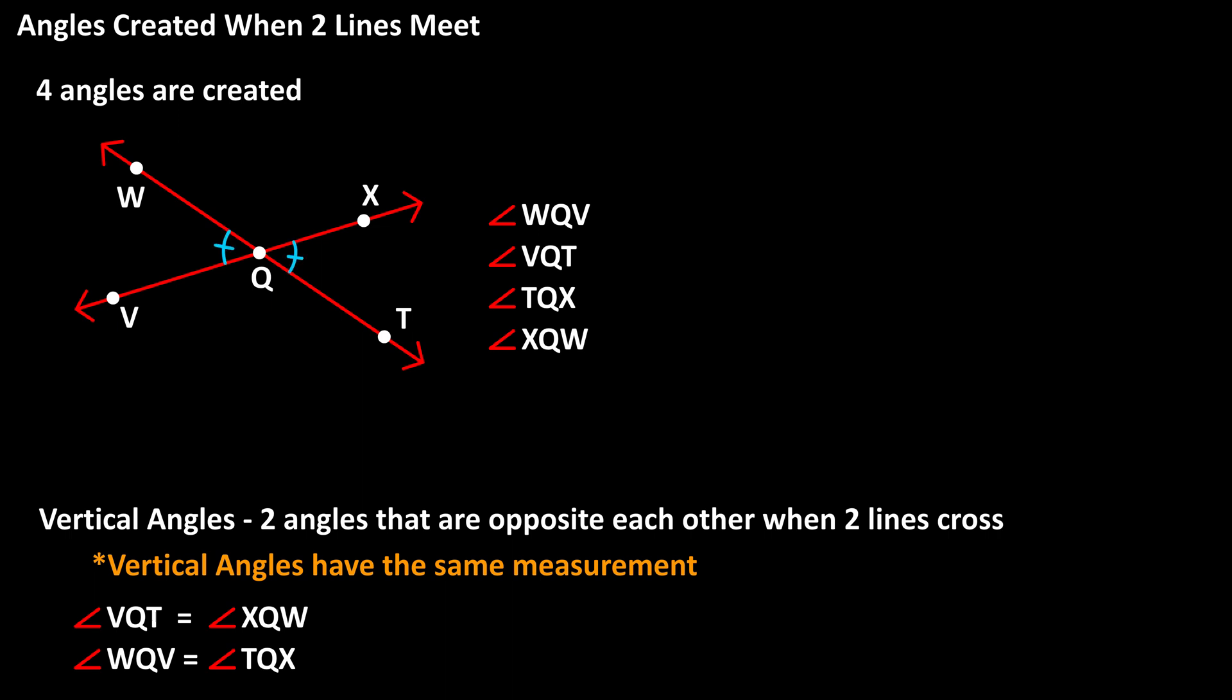We often put this little arc with a tick mark to signify that the angles have the same measurement, and we could use an arc with two tick marks to signify that the other set of angles have the same measurement as one another.